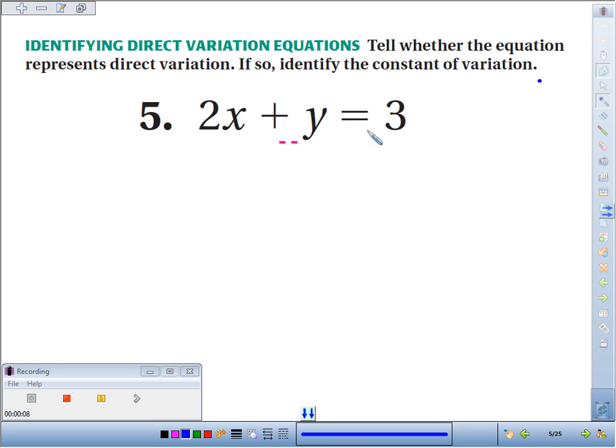In order to determine whether an equation represents direct variation, we should always solve for y first, get y by itself.